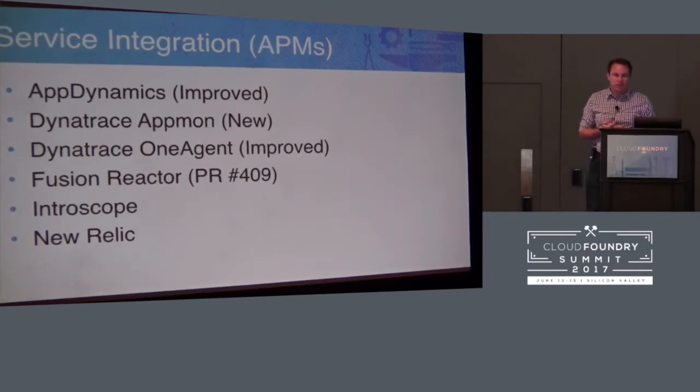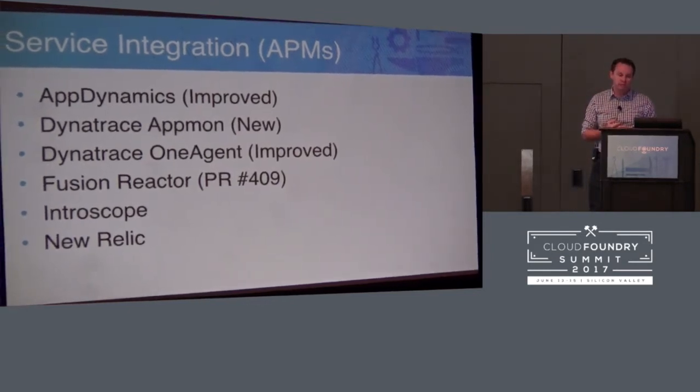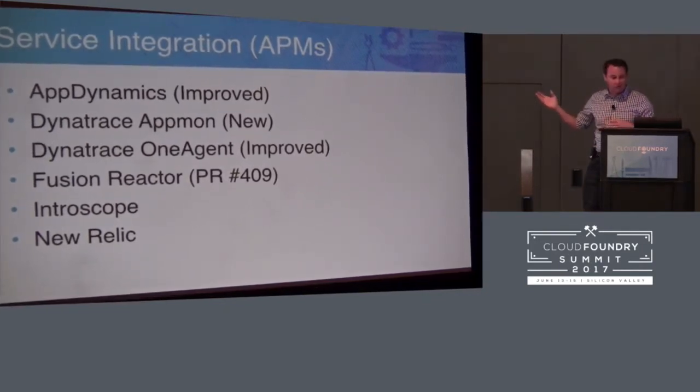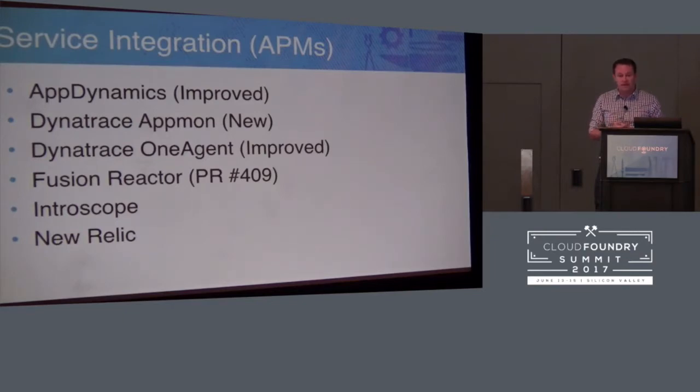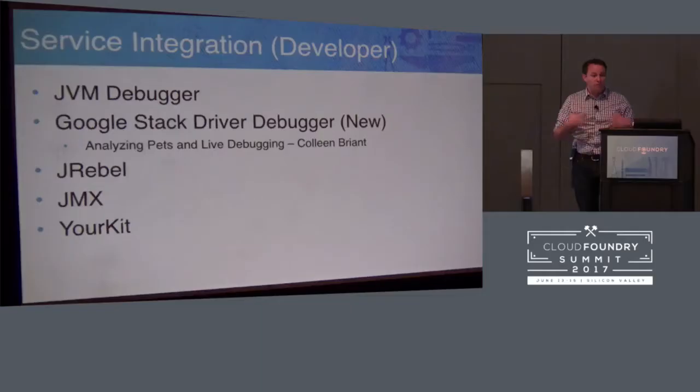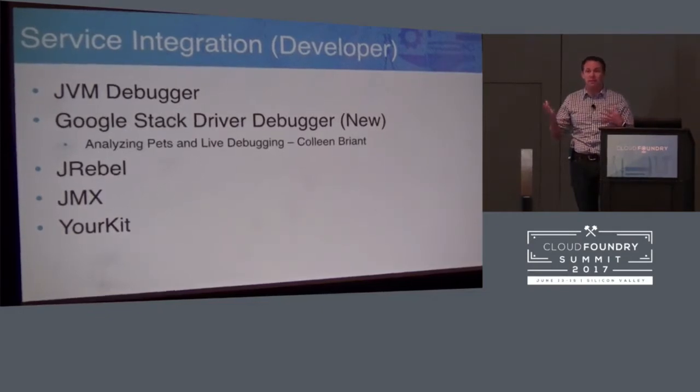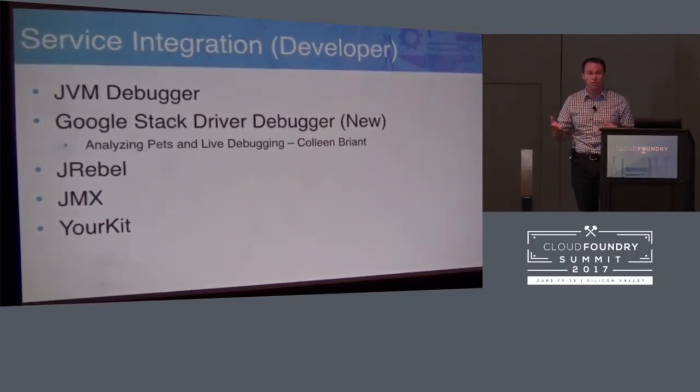The service integrations are by far the broadest area with huge improvements over the last year - so broad I had to break it into four or five slides. For APMs alone, we've made dramatic improvements to AppDynamics. Dynatrace has both improved and added another product. We have a PR coming for a new APM from Germany called Fusion Reactor. We also support Introscope and of course New Relic, the very first and most widely used integration with the build pack. Beyond APMs, we've done a ton of work to make developer integrations nicer - you can hook the JVM debugger into your container using CF SSH with all configuration done for you.